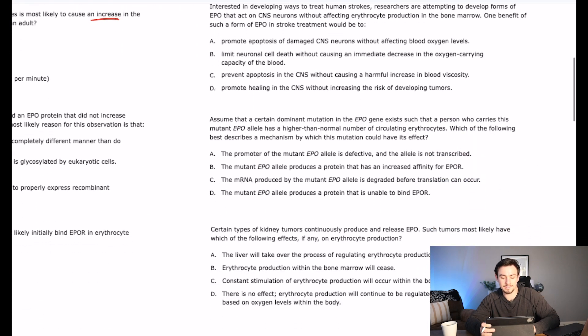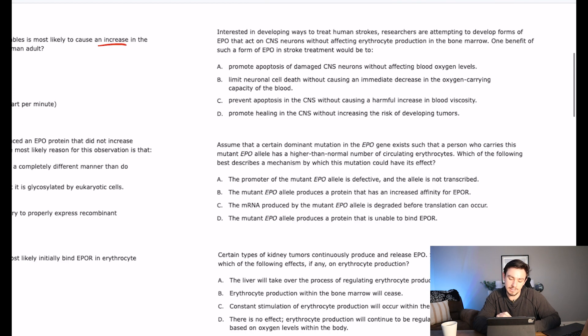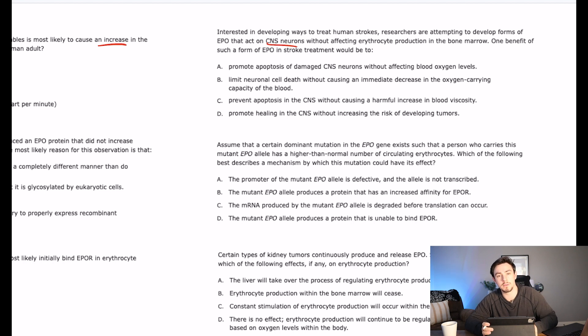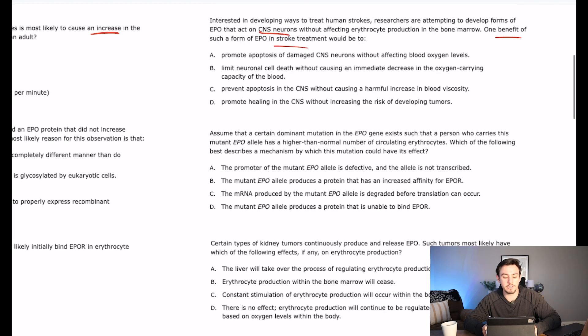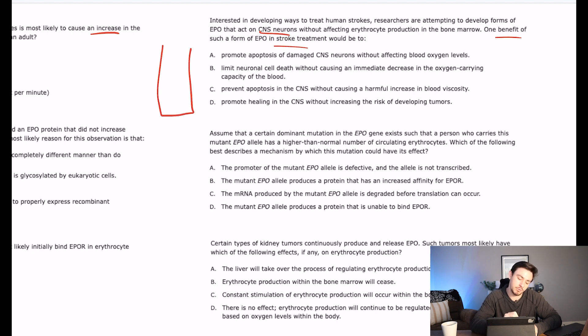Number 16 says interested in developing ways to treat human strokes, researchers are attempting to develop forms of EPO that act on CNS neurons without affecting erythrocyte production in the bone marrow. One benefit of such a form of EPO in stroke treatment would be to what? So they're saying, how can we get the CNS benefits of like decreasing apoptosis and maybe increasing angiogenesis without impacting our bone marrow? So meaning without cranking up how much red blood cells we actually produce. And the question says, what would be good about that? So we're pretty much just looking for the one that is going to be talking about getting the benefits of reperfusing your brain without cranking up how many red blood cells are in your blood.